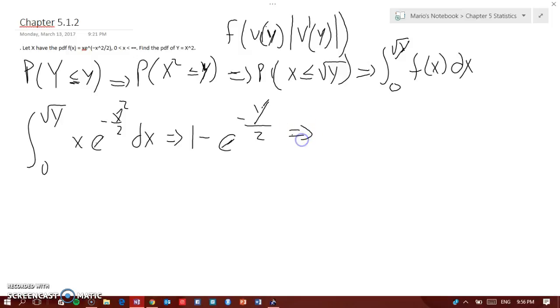And that would be little G of Y. And now we need to find big G or we need to find G of Y, which is G prime of Y. And that would be equal to 1 over 2 e to the negative Y over 2 from 0 less than Y less than infinity.